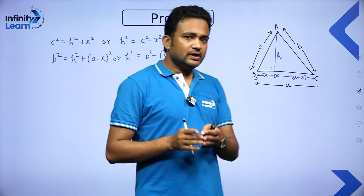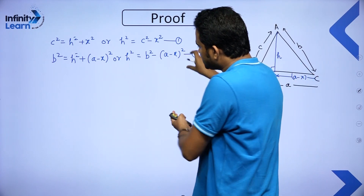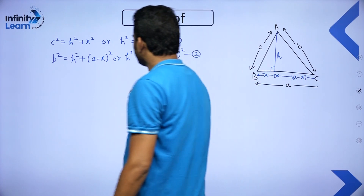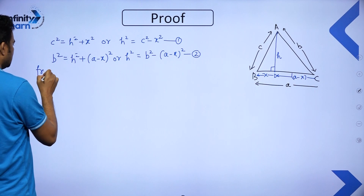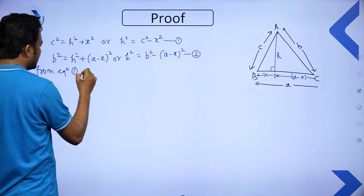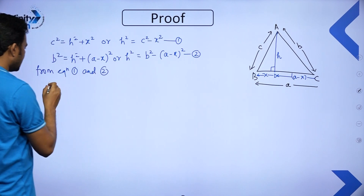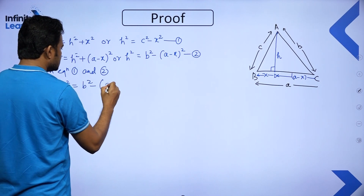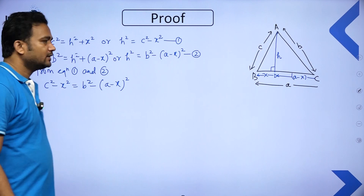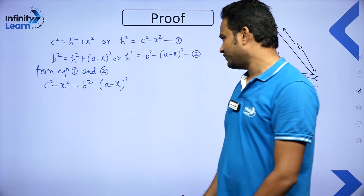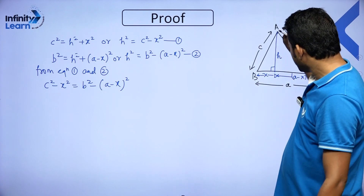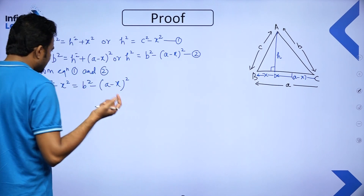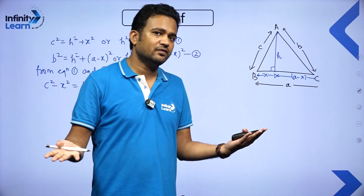Using equations 1 and 2, since both equal H², we can equate the right-hand sides: C² − X² = B² − (A − X)². We will simplify this to find the value of X, expressed in terms of A, B, and C — since those are the known quantities in the problem.